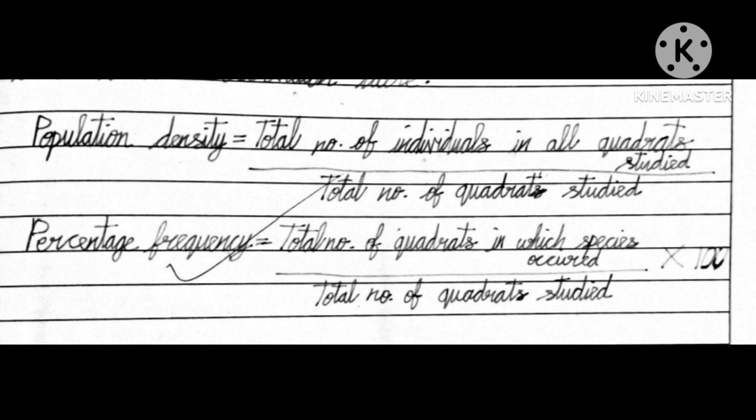For population density, total number of individuals in all quadrants studied divided by total number of quadrants studied. Then you will get for percentage frequency, total number of quadrants in which species occurred divided by total number of quadrants studied multiplied by 100. If you multiply by 100 you will get the percentage frequency. In that way the population density and the population frequency can be calculated.